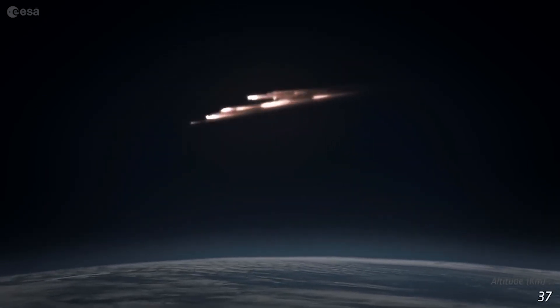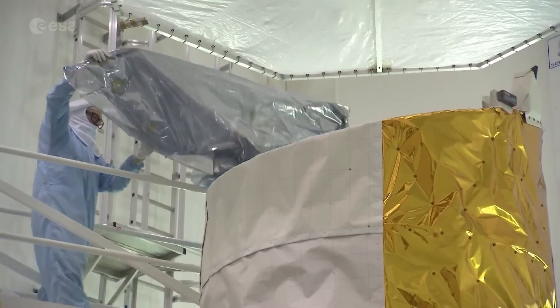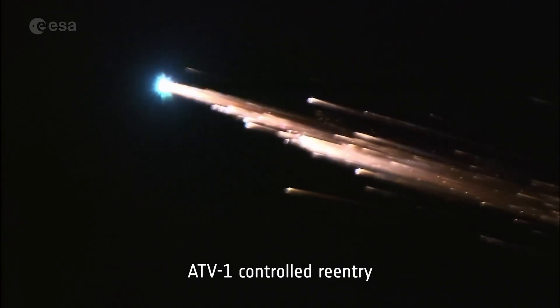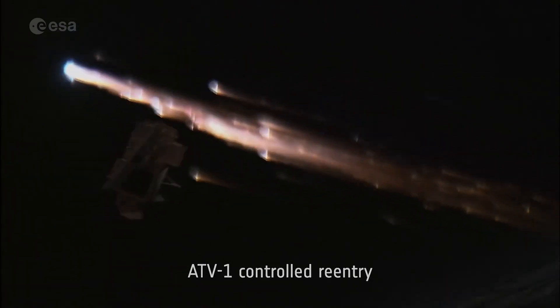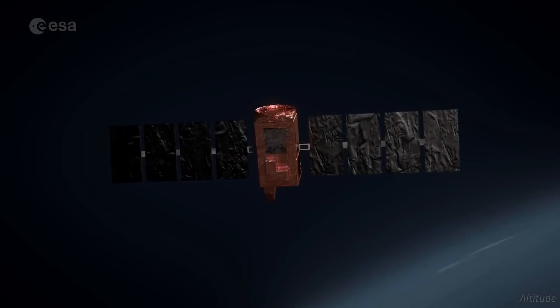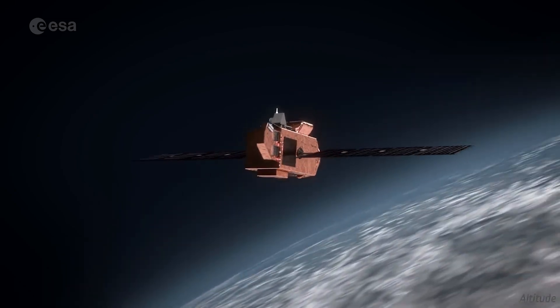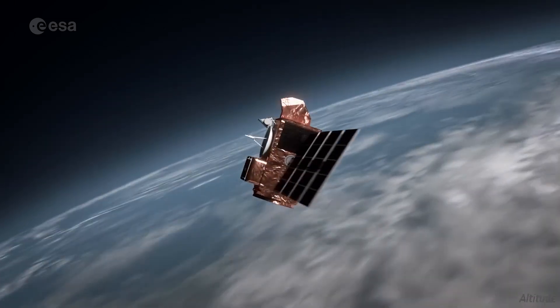Today, satellite missions are designed according to regulations that require them to either burn up entirely or undergo a controlled reentry at the end of their lives in orbit. This first attempt at an assisted reentry sets a new precedent for reentering active satellites that didn't fall under these regulations when designed.